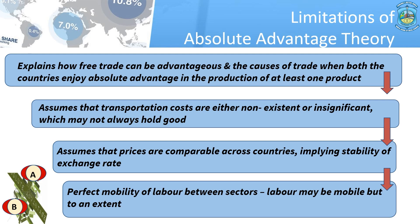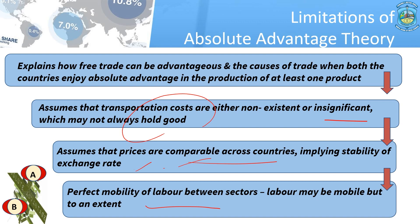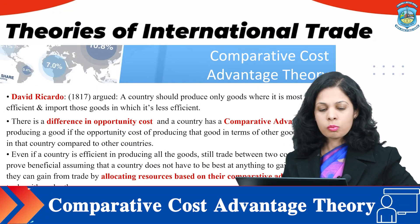The absolute advantage theory assumes transportation costs are either non-existent or insignificant, which may not hold when distances are greater. It also assumes prices are comparable across countries, implying exchange rate stability — but in today's scenario, exchange rates are driven by market demand and supply, changing every day. Additionally, it assumes perfect mobility of labor between sectors, but labor cannot always be useful across every sector, industry, or location.